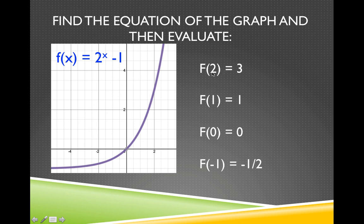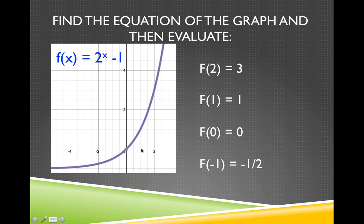Then I evaluate. Putting in 2: 2 squared is 4, minus 1 is 3. Putting in 1: 2 to the first is 2, minus 1 is 1. Putting in 0: 2 to the 0 is 1, minus 1 is 0. Putting in negative 1: the reciprocal of 2 is one-half, and one-half minus 1 is negative one-half. I could look at the graph and verify these points: 2 gives 3; 1 gives 1; 0 gives 0; and negative 1 gives negative one-half.